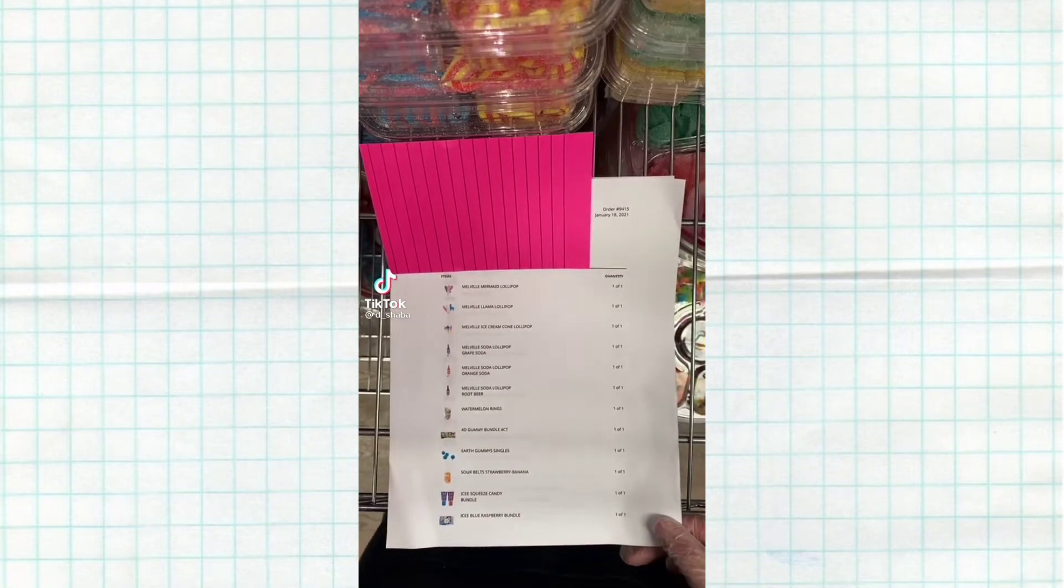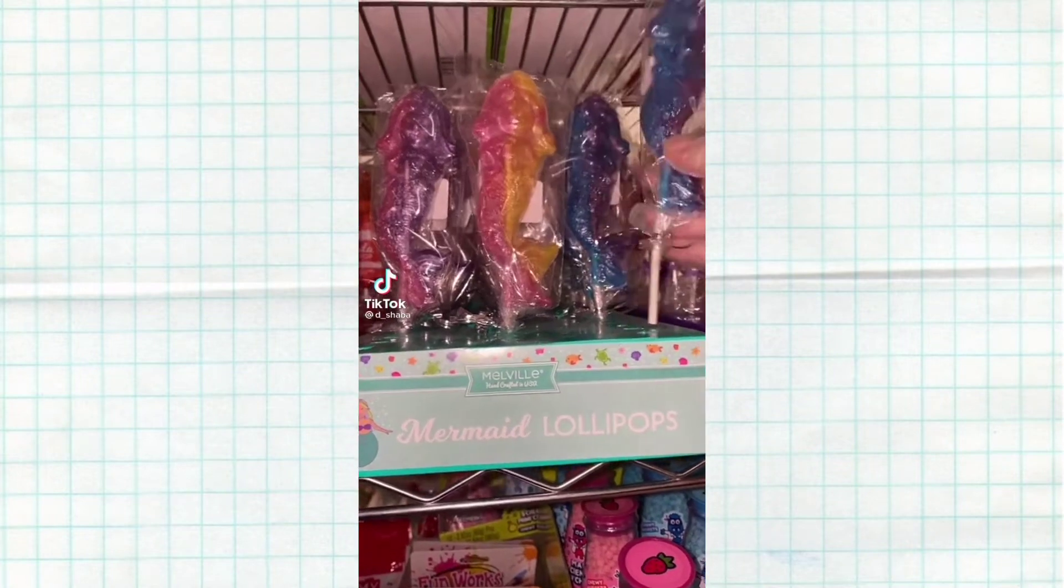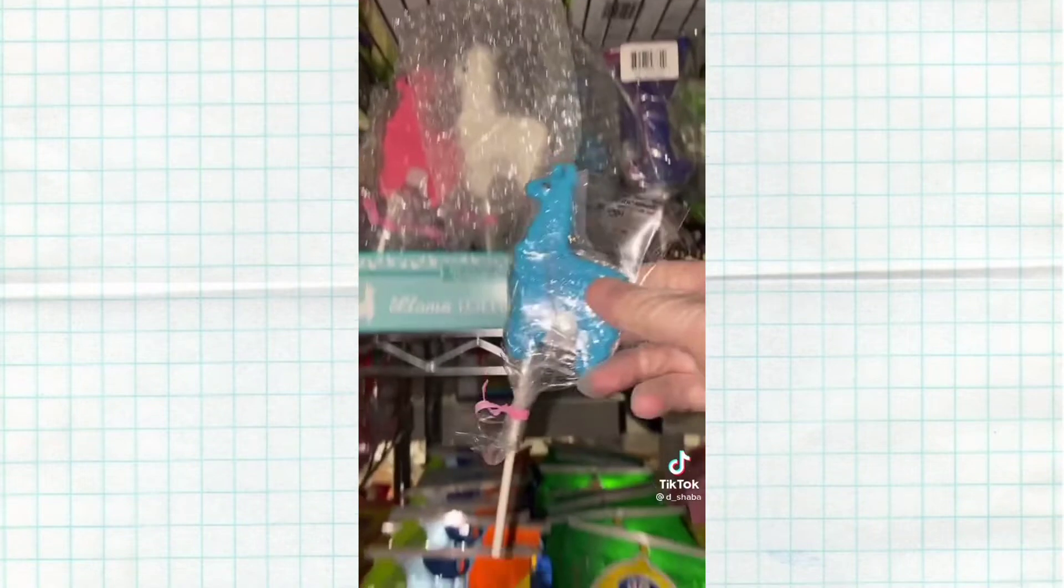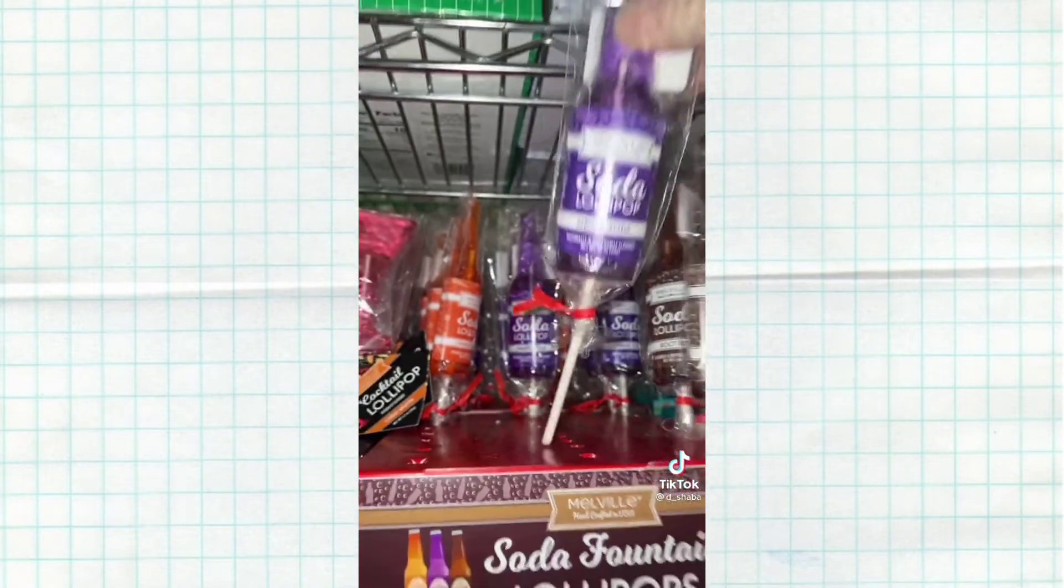Hi guys, let's package order number 9145. First, she ordered one mermaid lollipop, one llama lollipop, one ice cream cone lollipop, one grape soda, one orange, and one root beer.